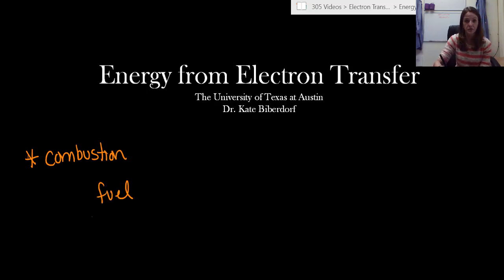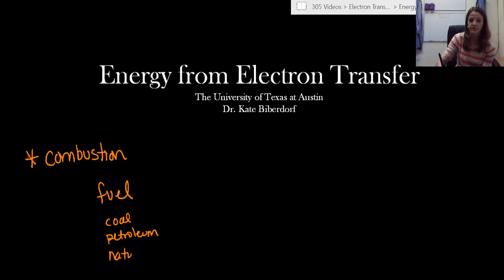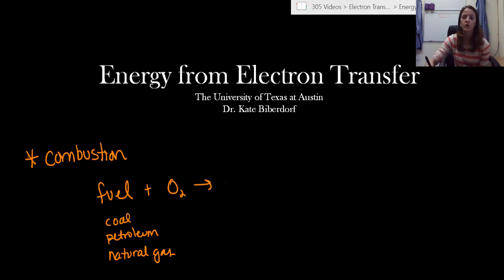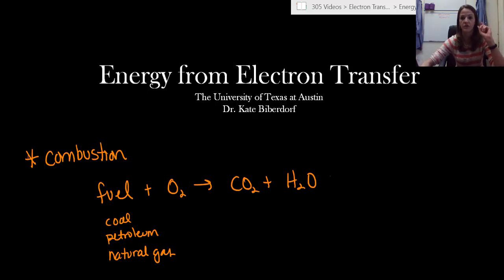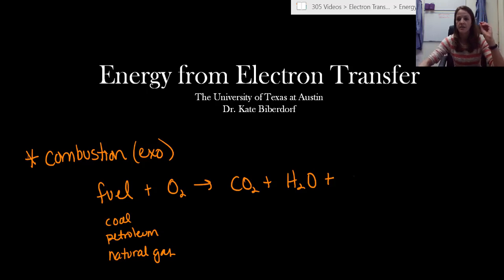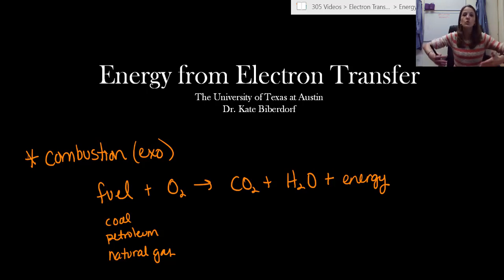You have to have a source of fuel. In our power plants we use fossil fuels — that's going to be either coal, petroleum, or natural gas. We take this source of fuel and treat it with oxygen, and then you produce two products: carbon dioxide and water. Now combustion reactions are exothermic, which means they are releasing energy, and it is this release of energy that is why we use fossil fuels in the first place to get our electricity.